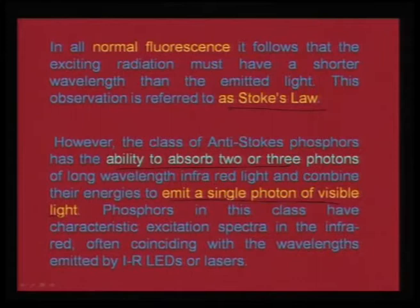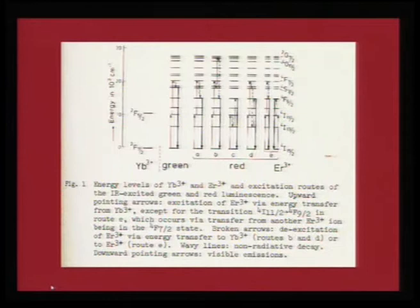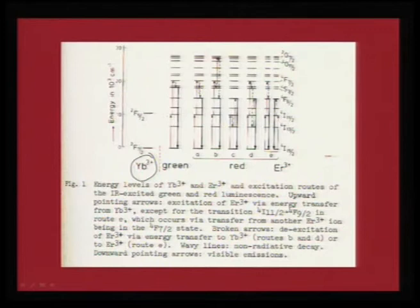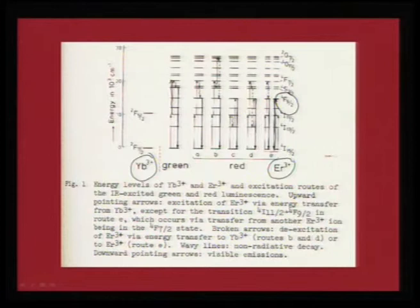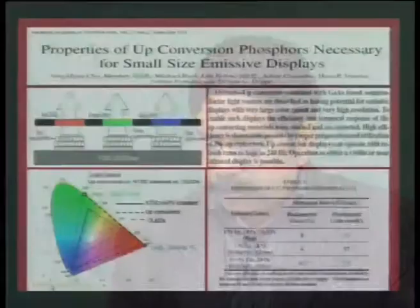An example of IR-excited phosphors: ytterbium dopant takes care of the emission from the ²F₇/₂ state to the ²F₅/₂ state, and co-doping with erbium translates this further to higher energy levels. The emission from the ⁴F₉/₂ to ⁴I₁₅/₂ transition is your red light emission, engineered by doping both ytterbium and erbium as activator and co-activator.